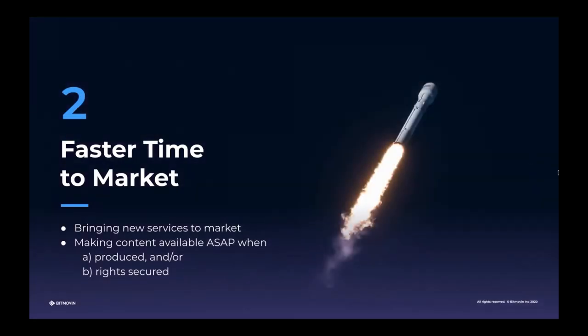So let's go through our next theme: faster time to market. For us, this means a few things at the same time — first, bringing entirely new services to market, launching new OTT services, and then once the services are launched, making that content available. We see two very common use cases where content needs to be available very quickly: one is for time-sensitive material to have a very quick turnaround from production conclusion to being available on all the devices users want, and of course when adding new libraries — making sure you are maximizing the monetization of those assets as quickly as possible and not having inventory going stale on the shelf.